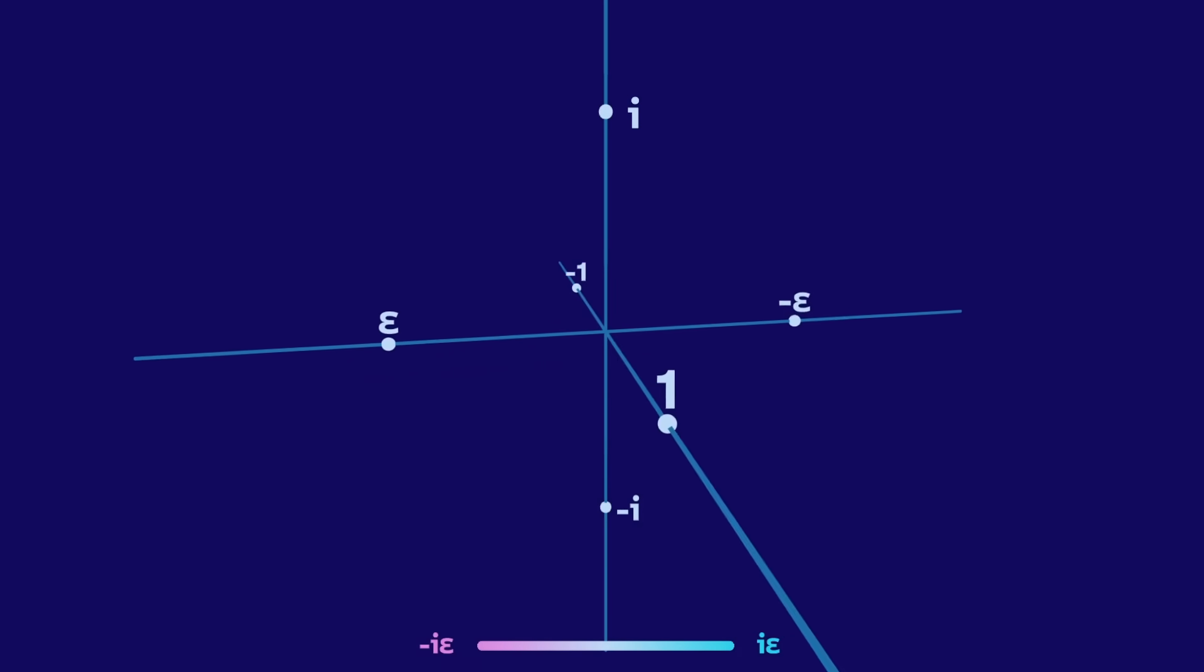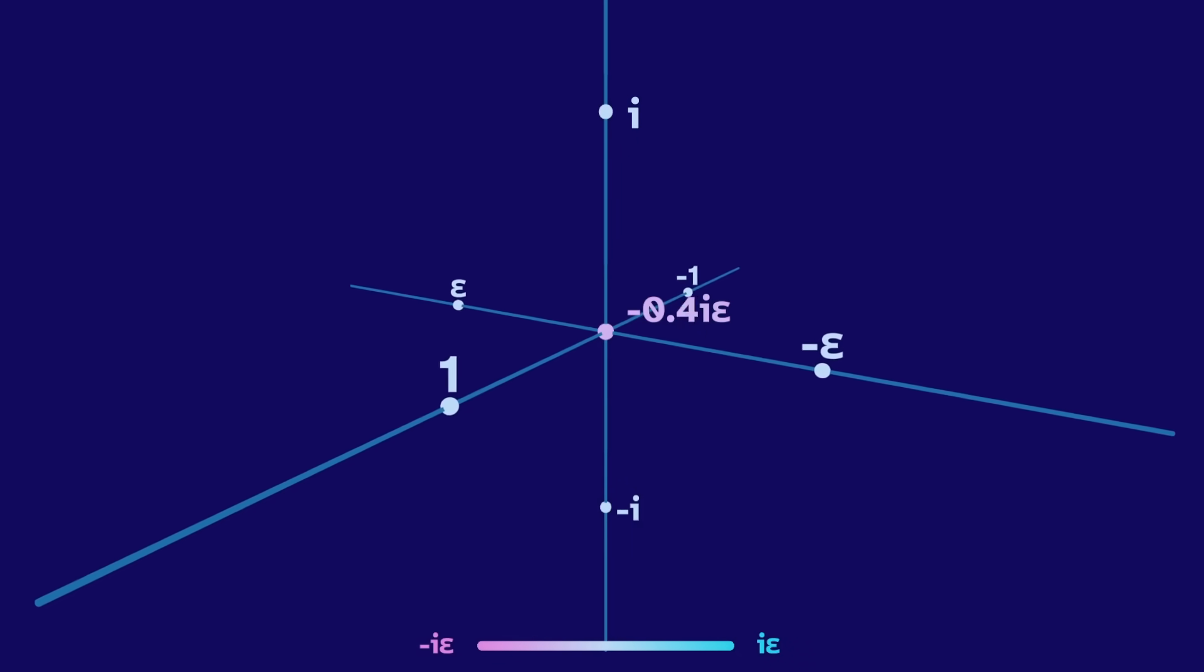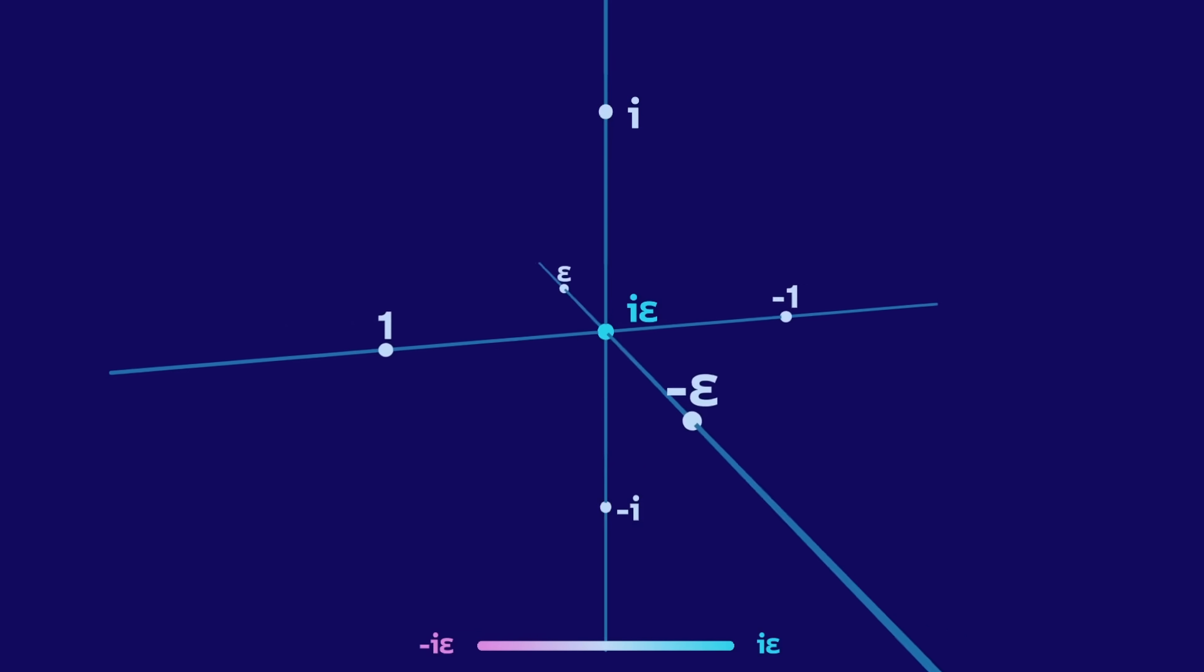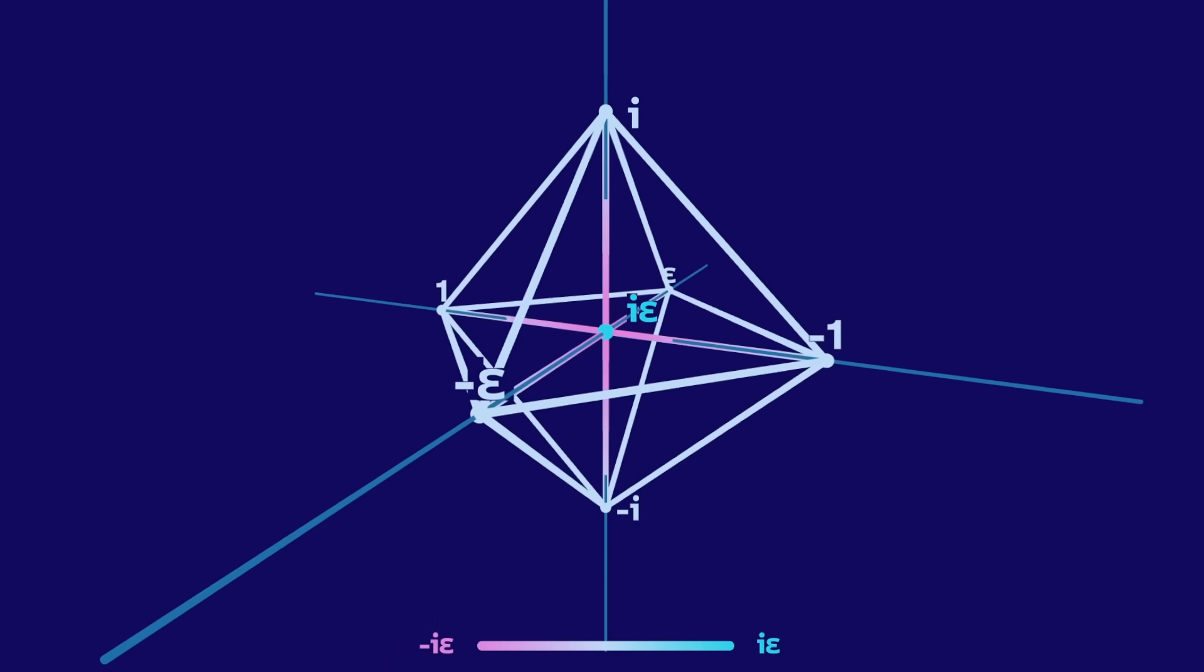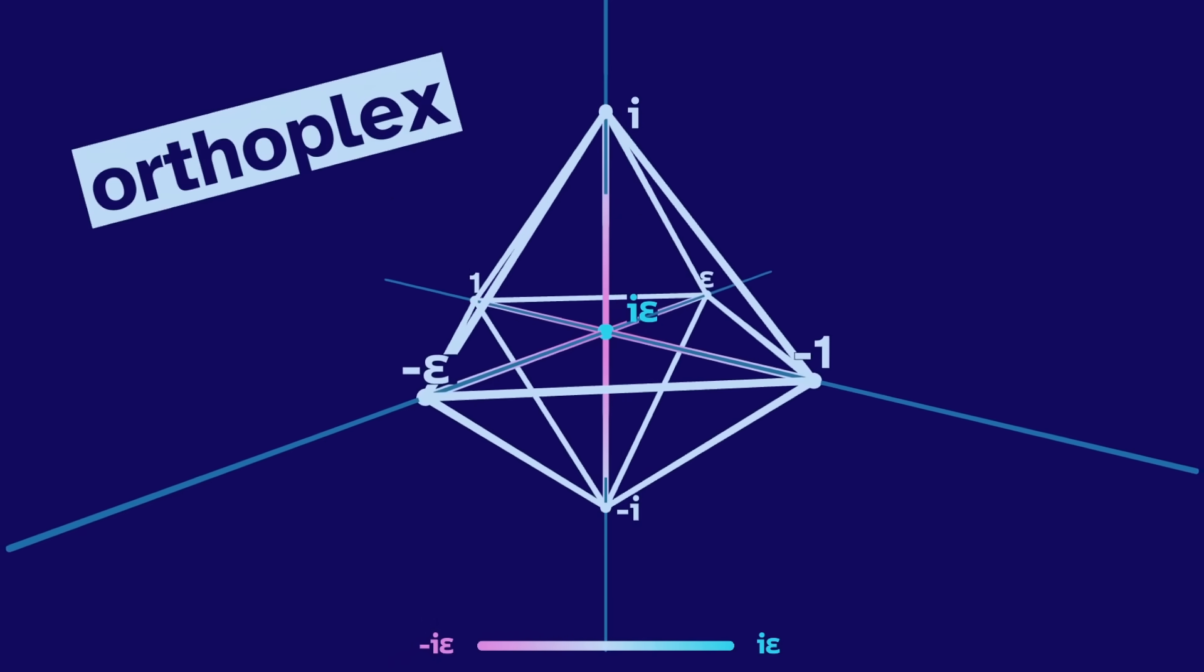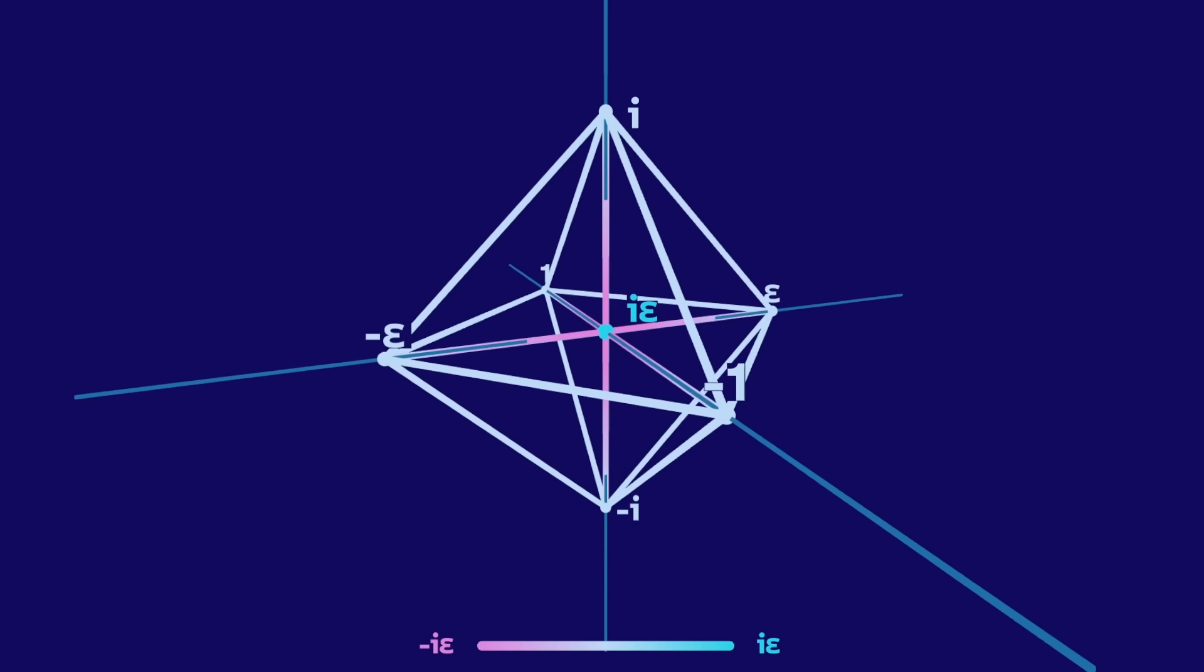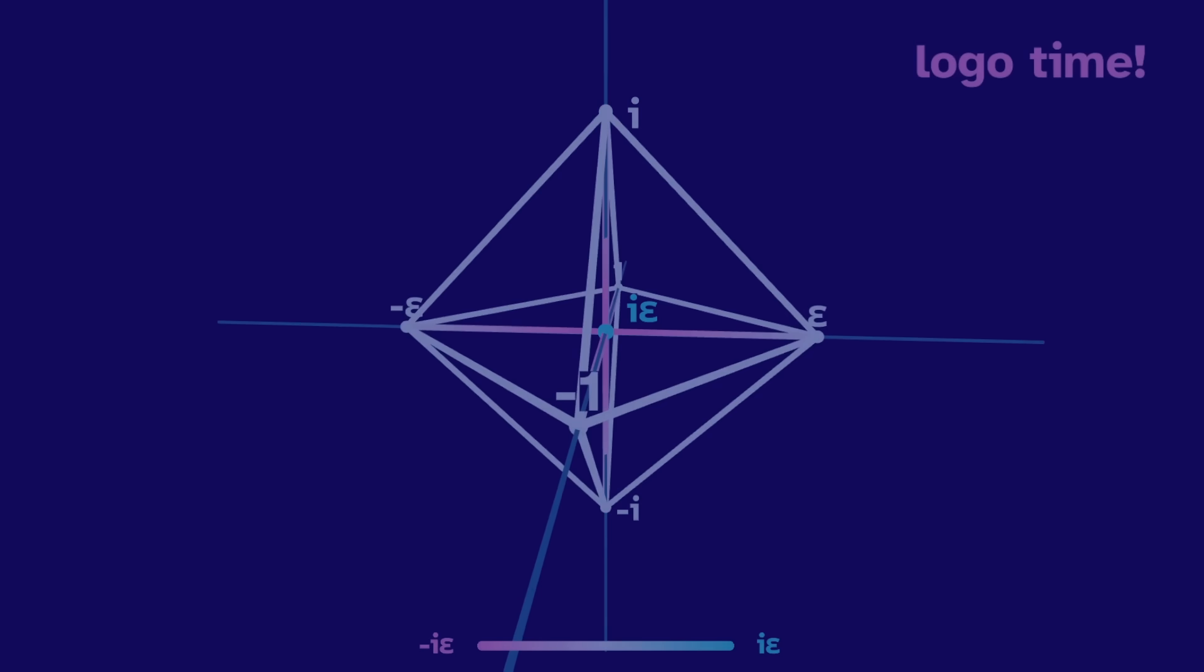So we'll use color for the imagidual dimension. Light red for negative, black inverse for zero, and greenish purple for positive. We can then connect the positive and negative imagiduals with these other points to make an orthoplex, the 4D version of an octahedron. It looks like an octahedron, at least until we spin it. Logo time! Oh, sorry. It's logo time.